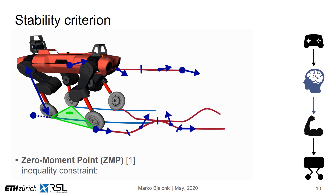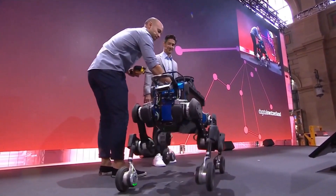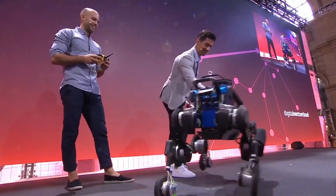We define a stability criterion based on the idea of the zero-moment point and generalize this approach for wheeled-legged robots. The zero-moment point, as defined here, is a function of the gravity-inertial forces acting on the torso of the robot. More specifically, this point needs to be inside the support polygon, which is spanned by the legs on the ground. Here we show an example of a support polygon in the form of a green triangle, since three legs are in contact with the ground. Having everything in place, we are able to create stable motions as shown.